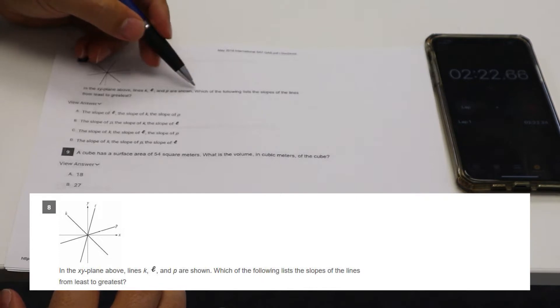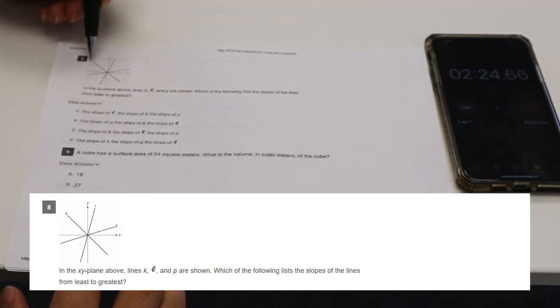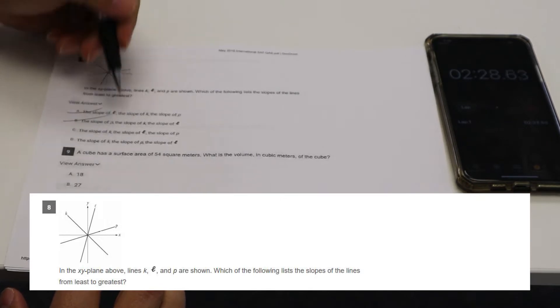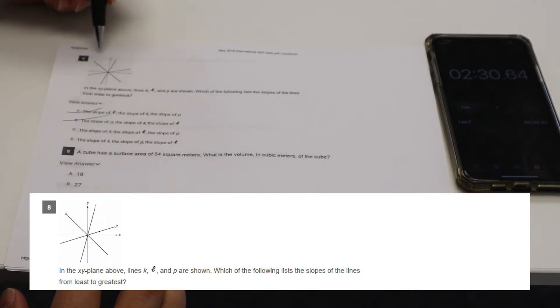All righty. K, L, and P slopes of the line from least to greatest. So K is negative. So that's going to be least. And then the next one is P and then L would be the greatest. So D.